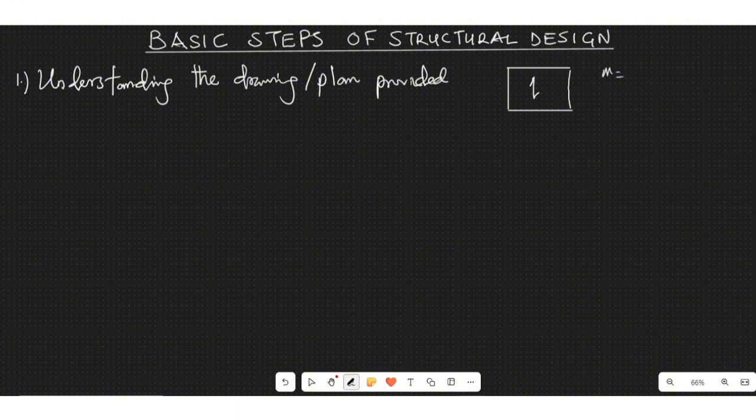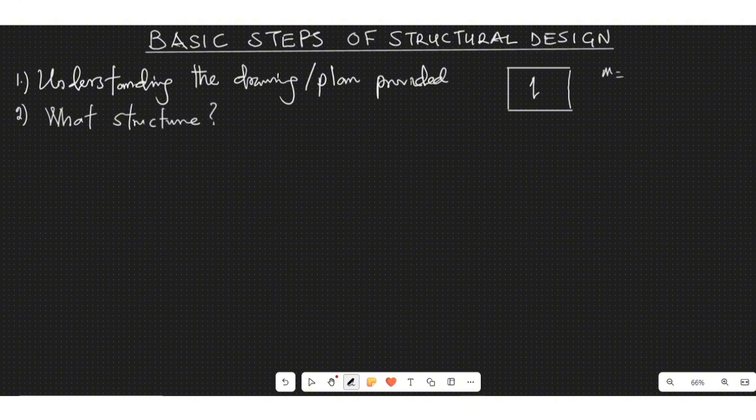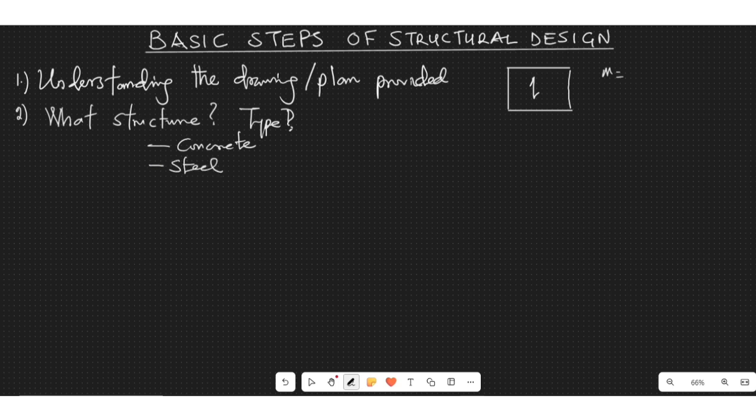So understanding the drawing would give you an idea of what next to do. The next one is to also know the type of structure. You ask yourself, what structure am I dealing with? What's the type of structure? And when we are talking about structure, it could be a concrete structure, it could be a steel structure, it could be a timber structure or a wood structure.